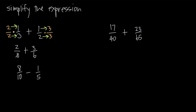Once we have equal denominators, we can go ahead and do the addition. When we do the addition, we add our numerators together: 2 plus 3 is going to be 5. And we keep the same denominator — we don't add the denominators. We don't say 6 plus 6 is 12; we just keep the same denominator. So this becomes 5 over 6.